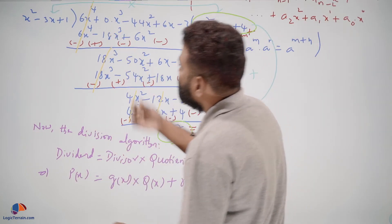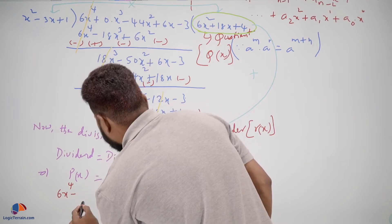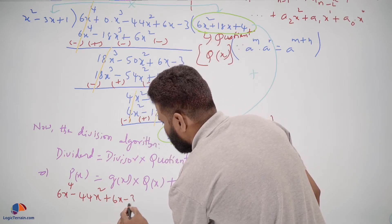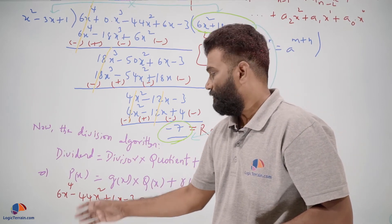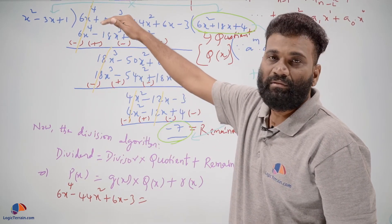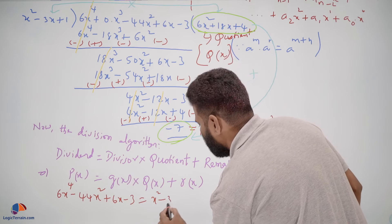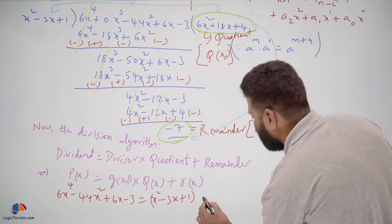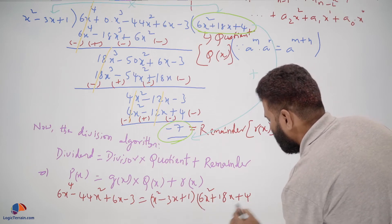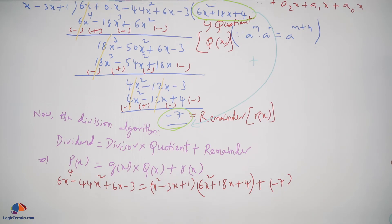The left-hand side, p(x), is 6x to the power of 4 minus 44x square plus 6x minus 3. The right-hand side: g(x) is x square minus 3x plus 1, into quotient 6x square plus 18x plus 4, plus remainder minus 7.